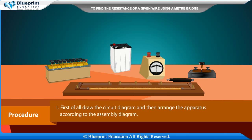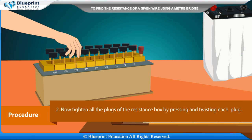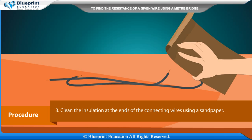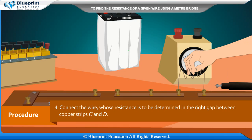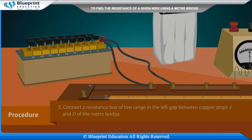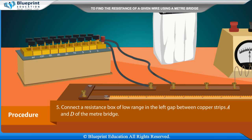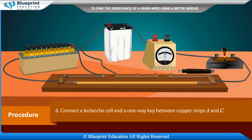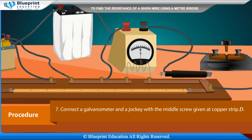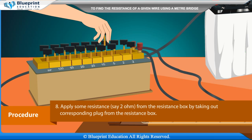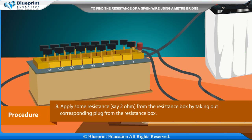Procedure: First draw the circuit diagram and arrange the apparatus according to the assembly diagram. Tighten all plugs of the resistance box by pressing and twisting each plug. Clean the insulation at the ends of the connecting wires using sandpaper. Connect the wire whose resistance is to be determined in the right gap between copper strips A and D of the meter bridge. Connect a Leclanche cell and a one-way key between copper strips A and C. Connect a galvanometer and a jockey with the middle screw at copper strip D. Apply a resistance of, say, 2 ohms from the resistance box.